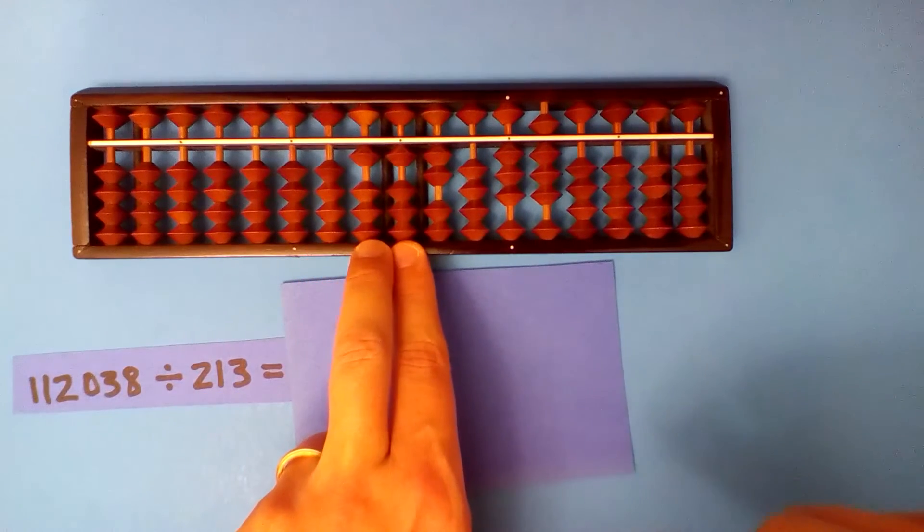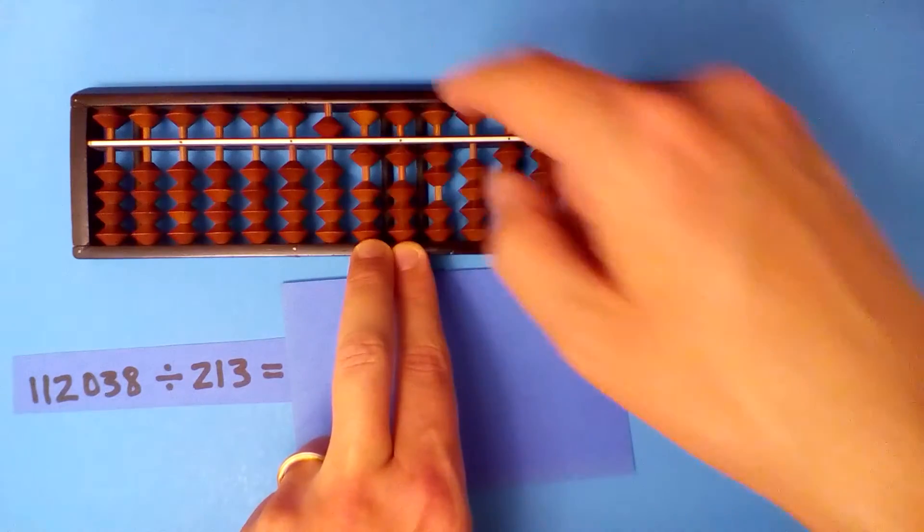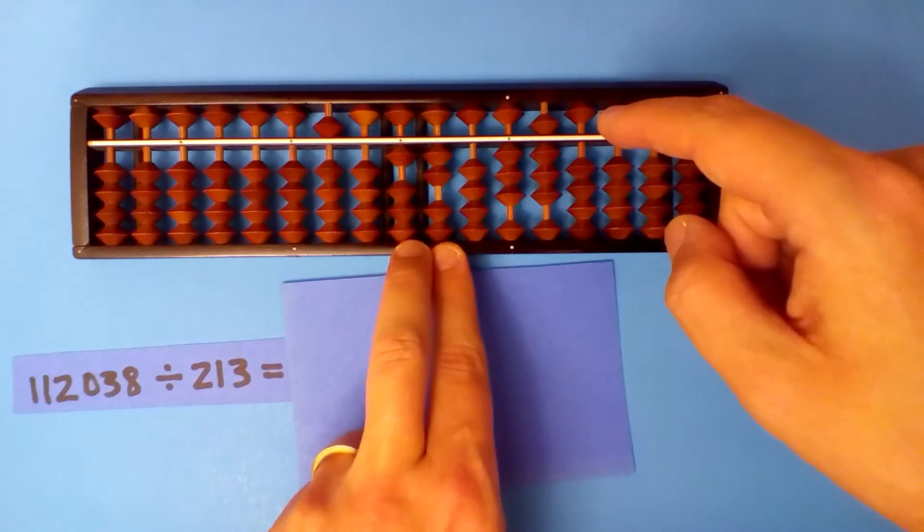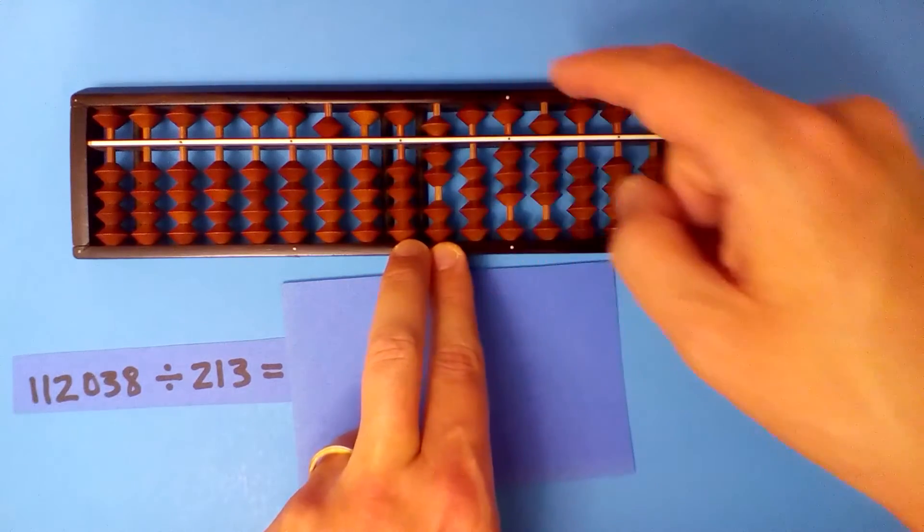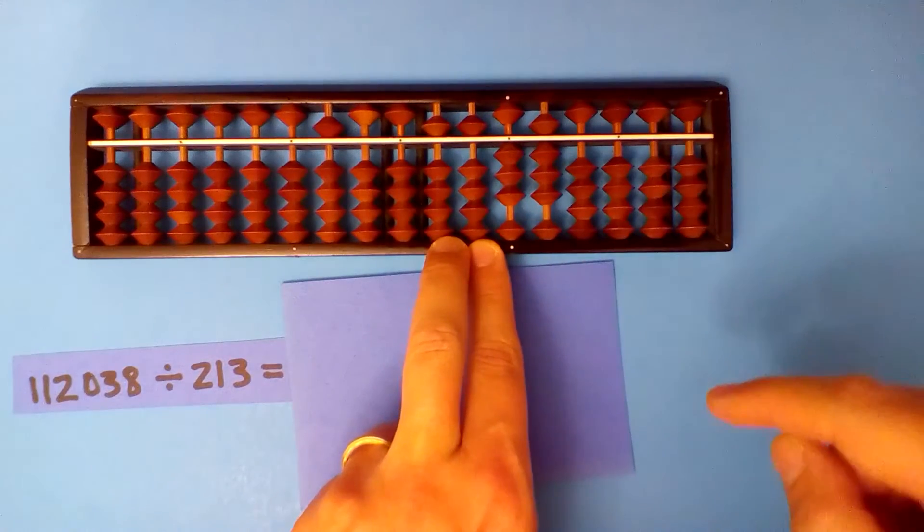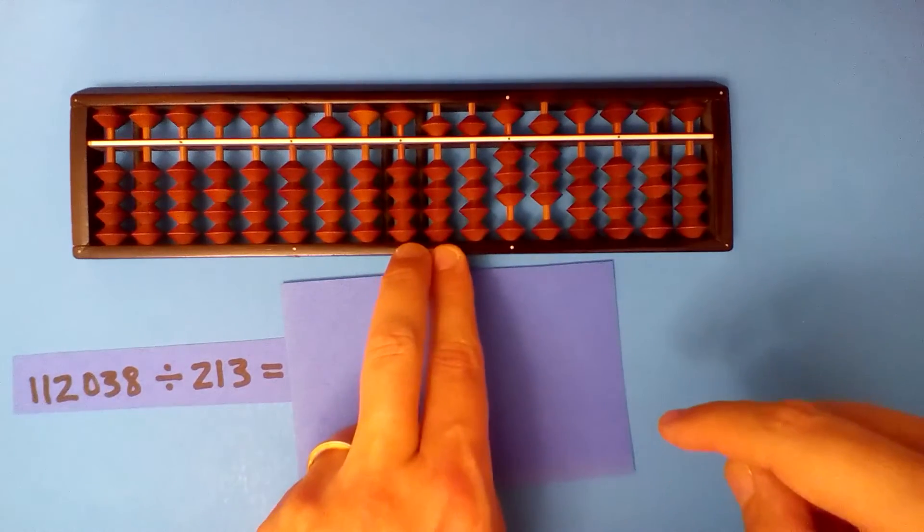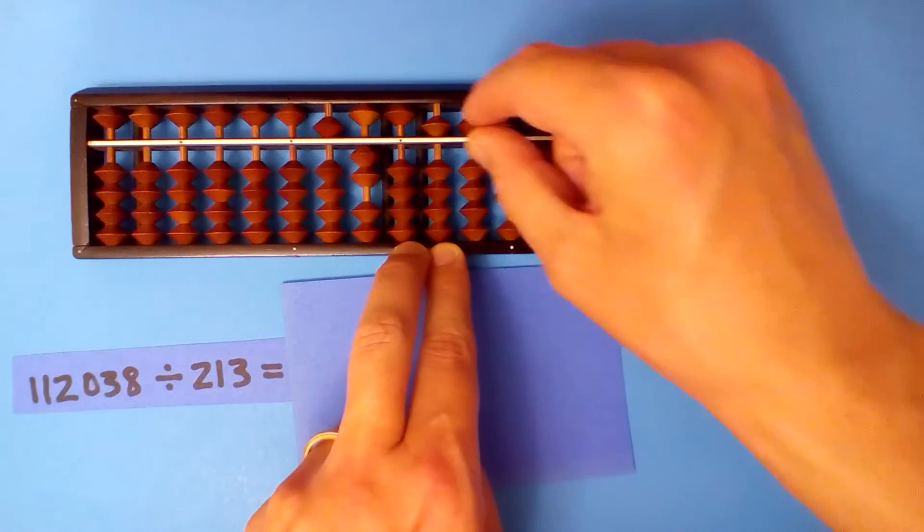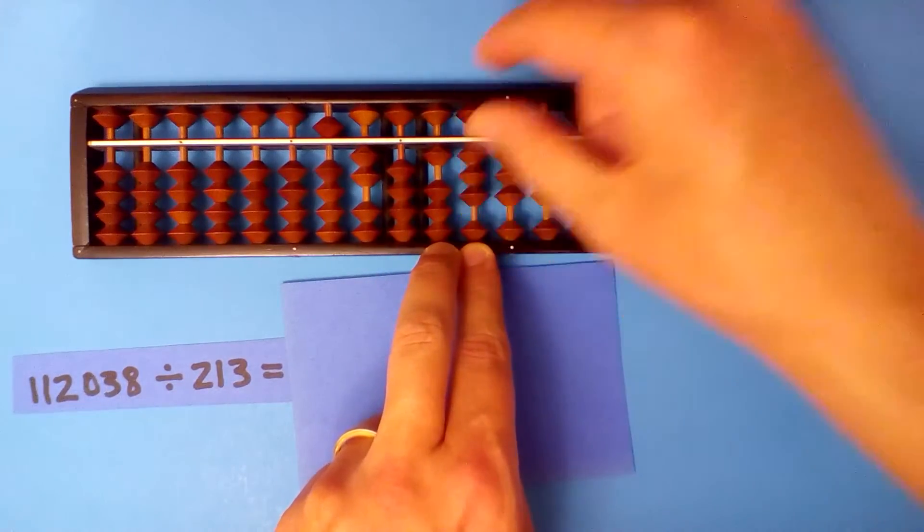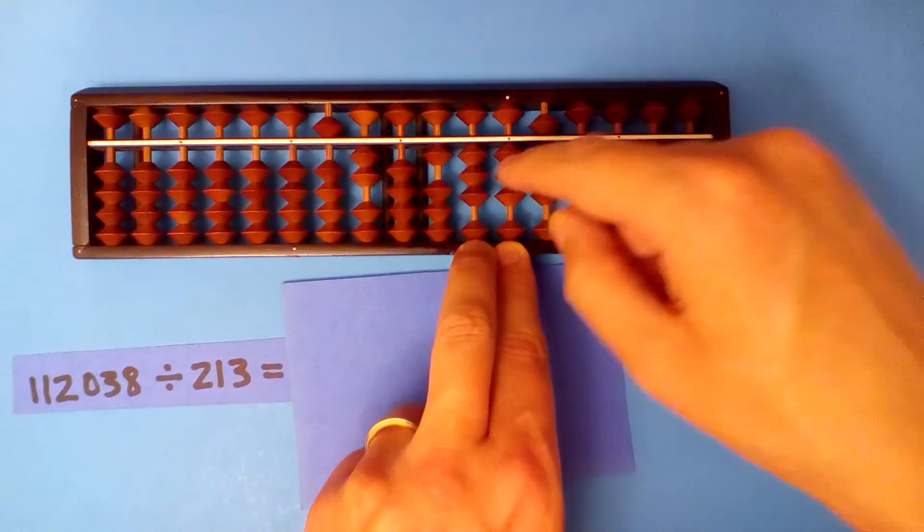Two into eleven five times. Five times two ten, five times one five, five times three fifteen. Two into five twice. Two times two four, two times one two, two times three six.